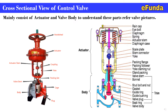Positioners are used to control the opening and closing of the actuator based on the electric or pneumatic signal required for the control valve. Typically, an air set regulator is also required to provide a regulated supply of air pressure to the positioner, so as to have regulated air supply to the control valve.